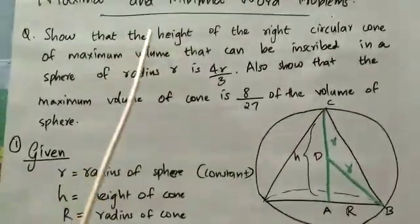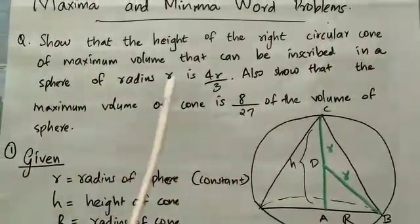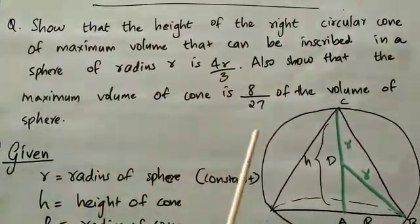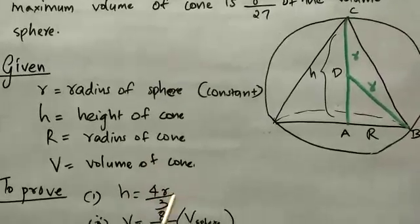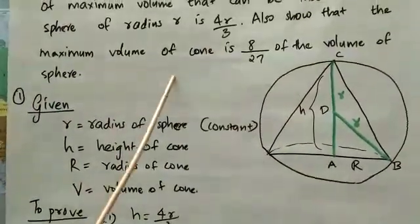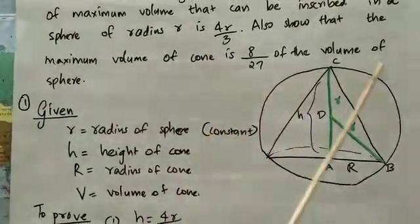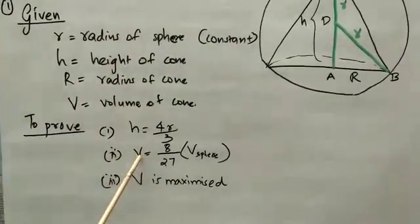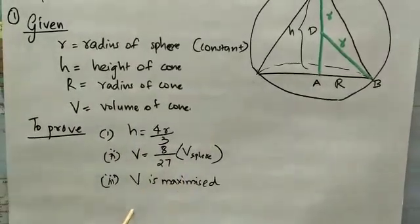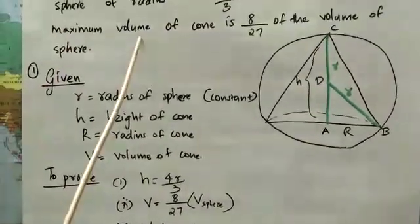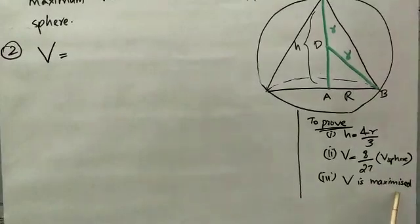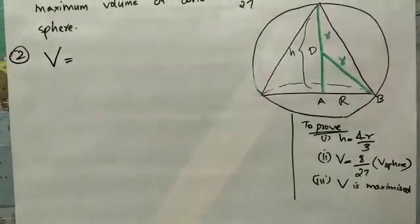We need to prove: first, the height of the right circular cone of maximum volume inscribed in a sphere of radius r is h = 4r/3. Second, the maximum volume of the cone equals 8/27 of the volume of the sphere. Since the volume is being maximized, we kickstart with the volume formula.